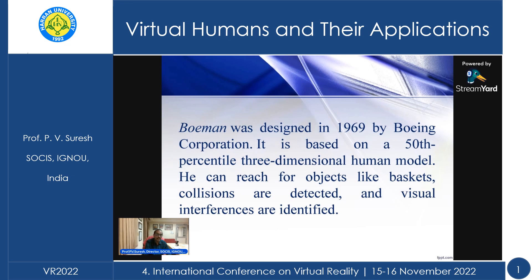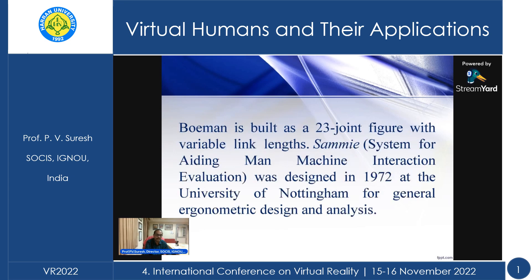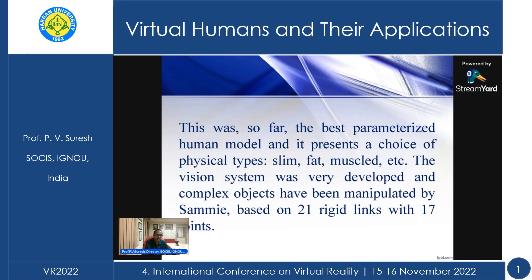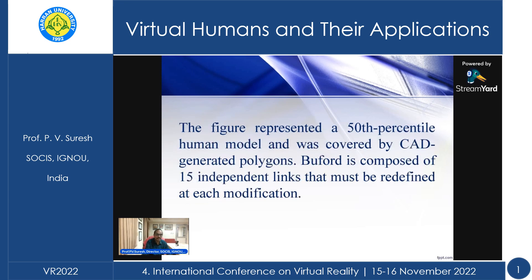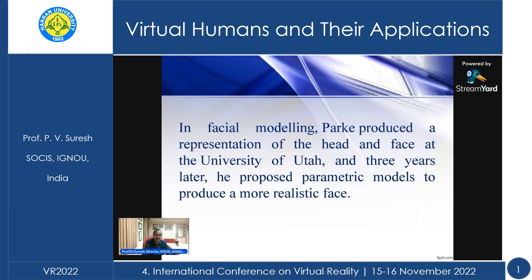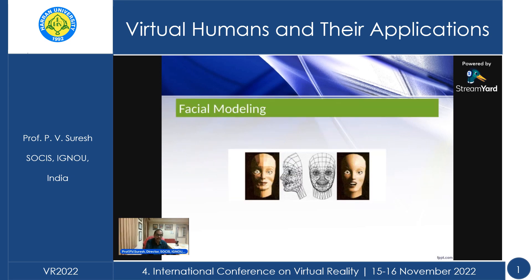Another model is Boiman, designed in 1969 by Boeing Corporation, based on a 50th percentile three-dimensional human model. You can reach for objects, collisions are detected, and visual interferences are identified. Then, Parquet produced a representation of the head and face at the University of Utah, and three years later proposed parametric models to produce a more realistic face — creating a virtual human for facial modeling.